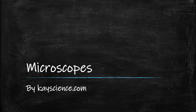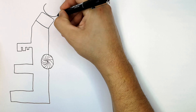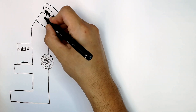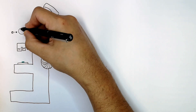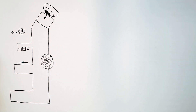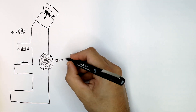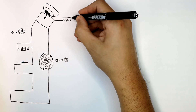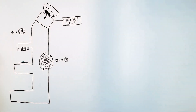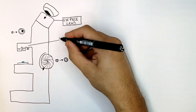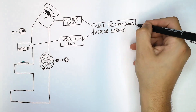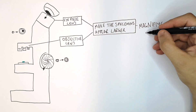When using a microscope, you look through the eyepiece lens and place the slide, which has the specimen on it, onto the stage. The eyepiece lens and the objective lenses both work to make the image appear larger by magnifying it — we call this magnification. So they both magnify the specimen, making it appear larger.